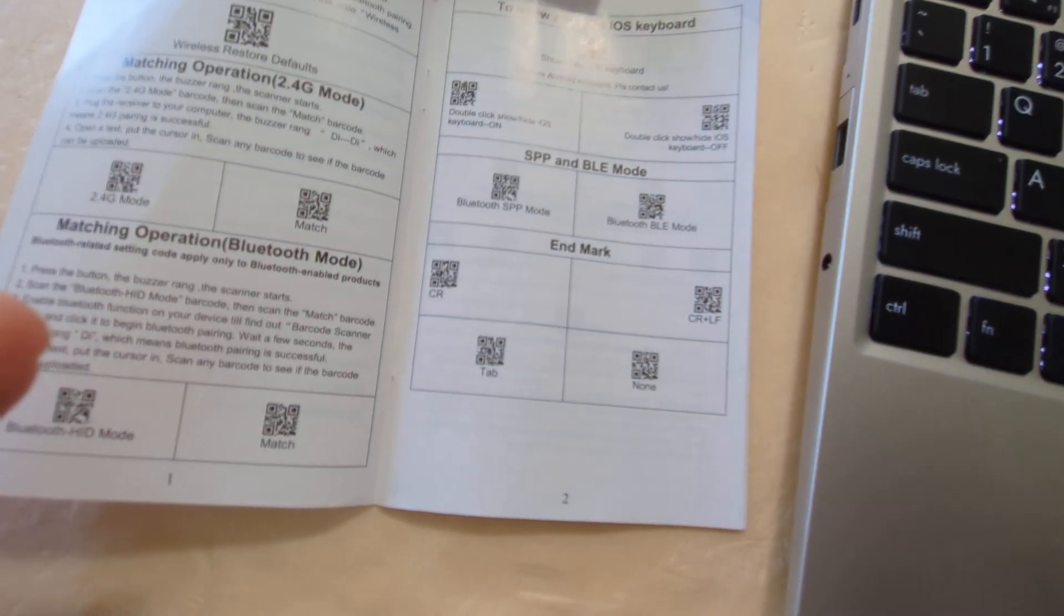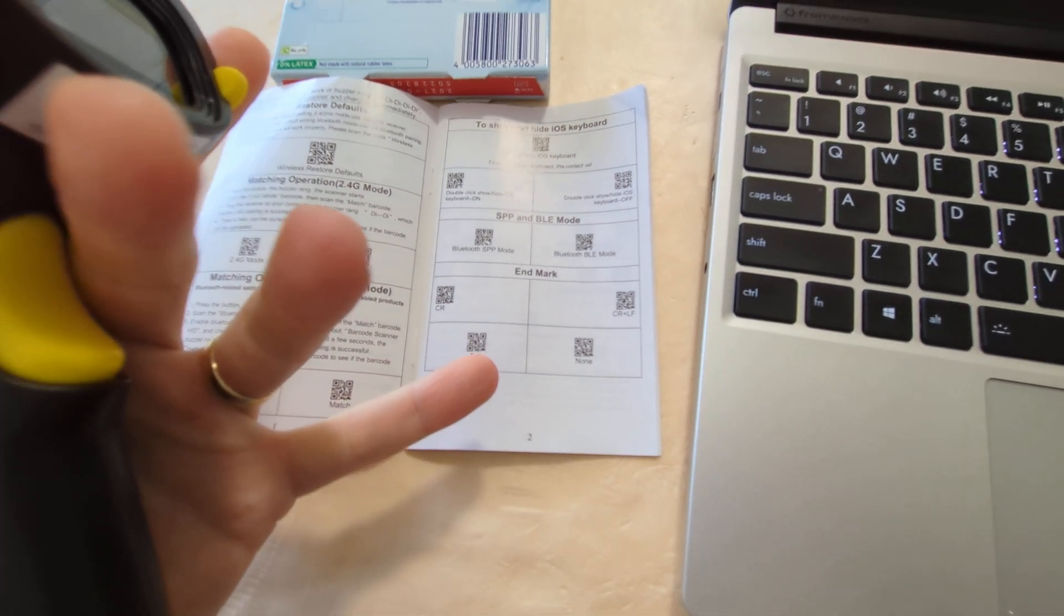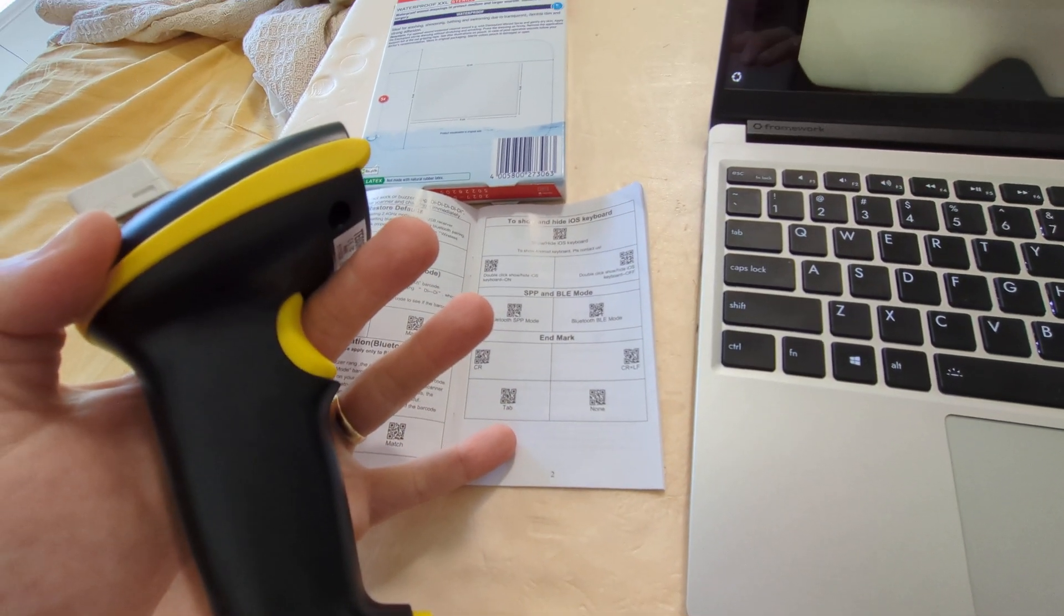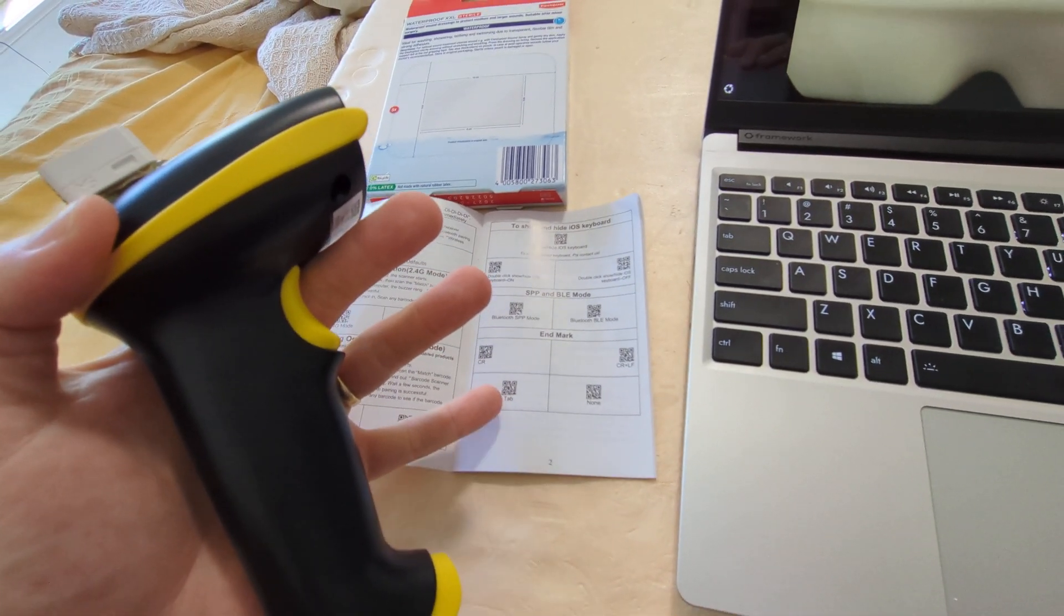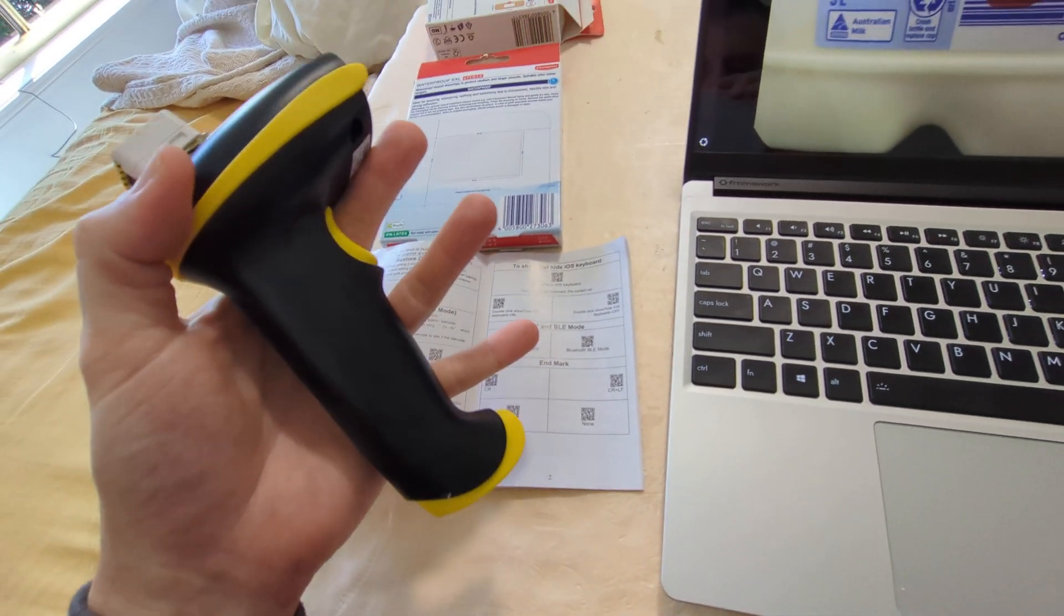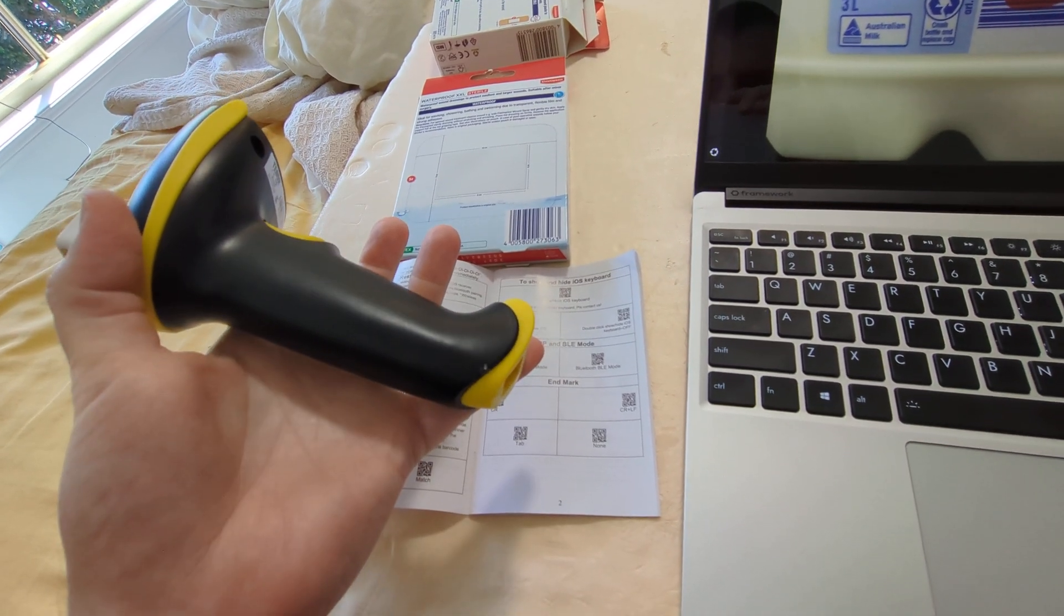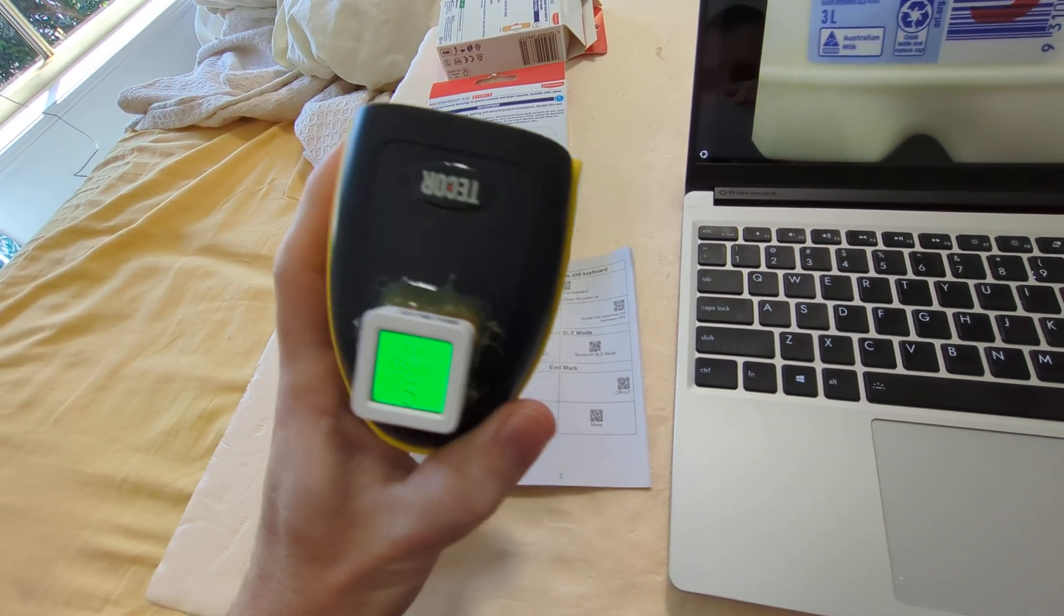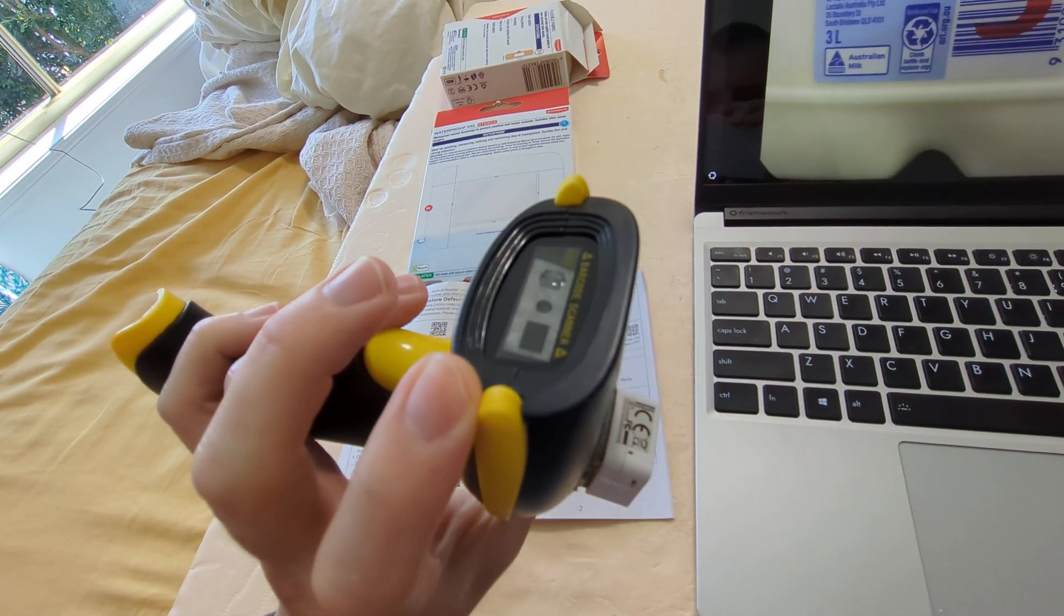So there's an end mark section of the barcode scanner manual that is insufficient because that inserts the tab character at the end of the signal that it sends to the keyboard via Bluetooth or USB, it doesn't change the configuration of the actual module you can see in the front there.